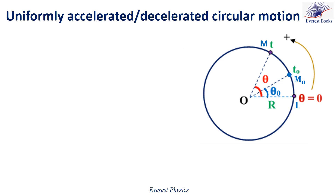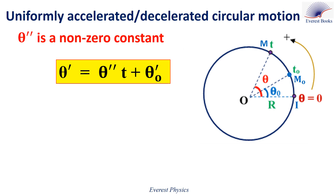A particle M moves along the circumference of a circle of center O and radius R. If the angular acceleration θ'' is a non-zero constant, then the motion of M is uniformly accelerated or uniformly decelerated circular motion. We will explain three relations. In the first relation: θ' = θ''·t + θ'₀. Here θ' is the angular velocity of M — positive if M moves in the direction of the positive sense, negative otherwise. θ'₀ is the initial angular velocity; if M starts from rest, θ'₀ = 0.